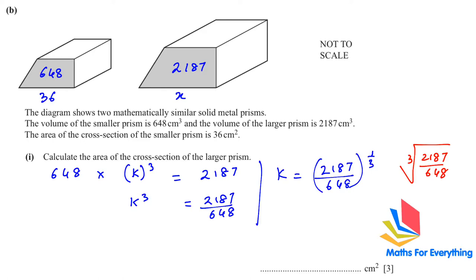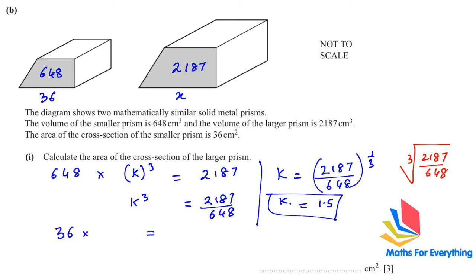The scale factor is 1.5. Since area scales by k², the cross-sectional area of the larger prism = 36 × 1.5² = 36 × 2.25 = 81 square centimeters.